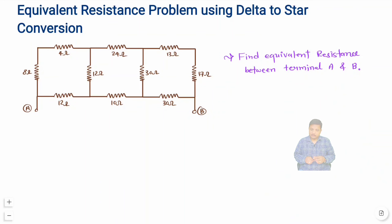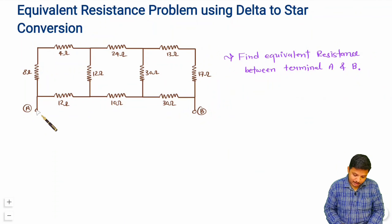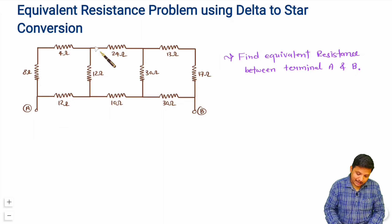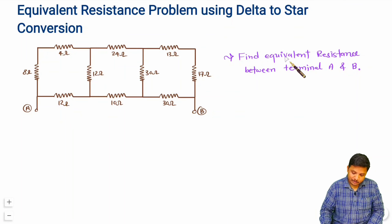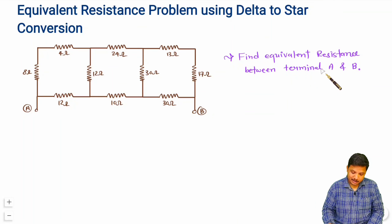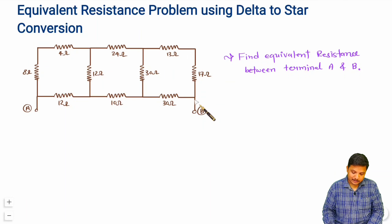Let us see the question first. Here we are having one electrical network and we are tasked with finding the equivalent resistance in between terminal A and terminal B.